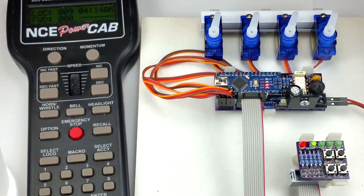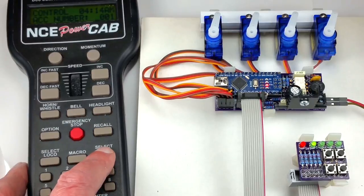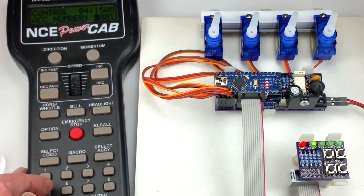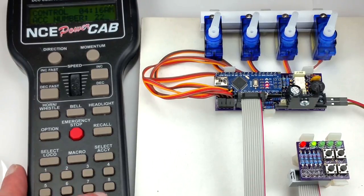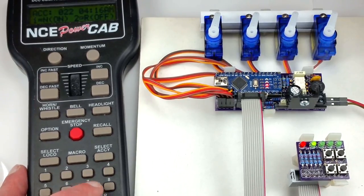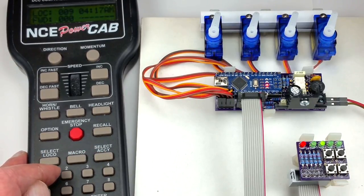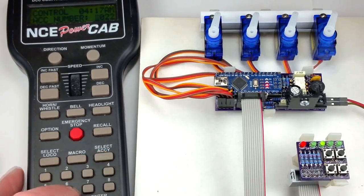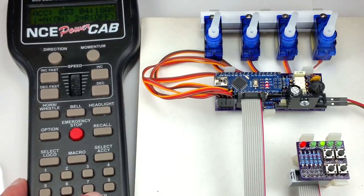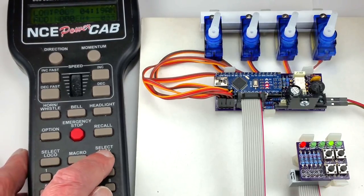We do this address setup by using a power cab in this case. Press select accessory. We type in an address, 2.2 here. Any address between 1 and 2047. Press enter. And then press the 1 key to throw the turnout. And then we move on to servo 2. We'll address 3.3. Enter. Press 1 again. That's programmed servo 2.